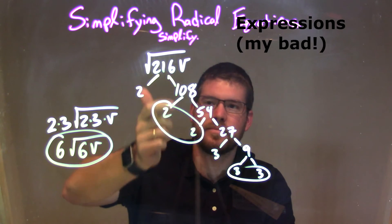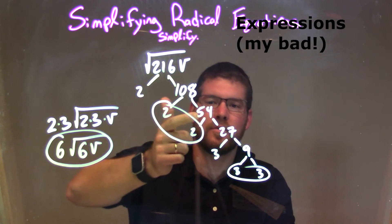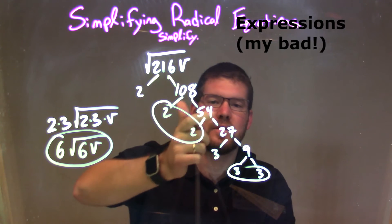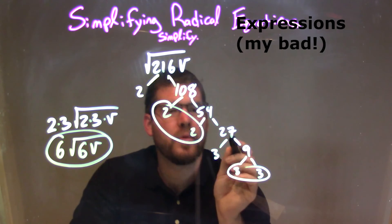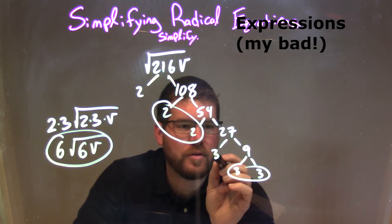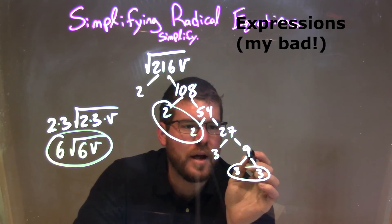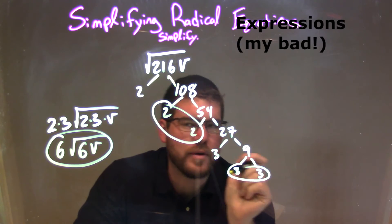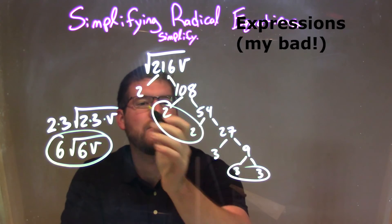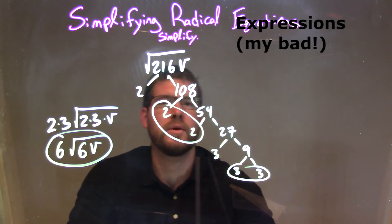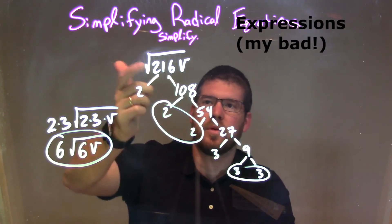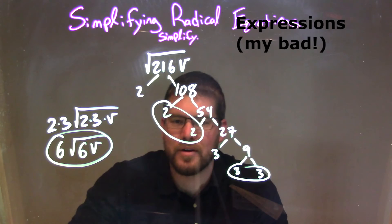I keep breaking it down. 2 goes into 216 — 108 times. 2 goes into 108 — 54 times. 2 goes into 54 — 27 times. And then 27 broken down as 3 times 9, and 9 as 3 times 3. Leaving us 2 times 2 times 2 times 3 times 3 times 3, which is the same thing as 216.